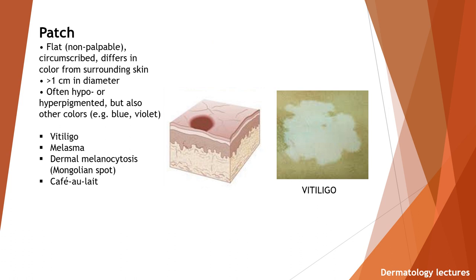What is a patch? It is flat, non-palpable, circumscribed, differs in color from surrounding skin, greater than one centimeter in diameter, often hypo or hyperpigmented but other colors can be present, for example blue or violet. The examples are vitiligo, melasma, dermal melanocytosis, Mongolian spot, café-au-lait macule. Here you can see the example of a patch of vitiligo.